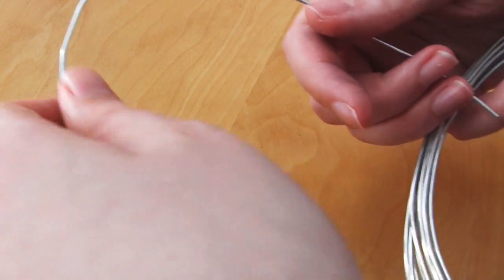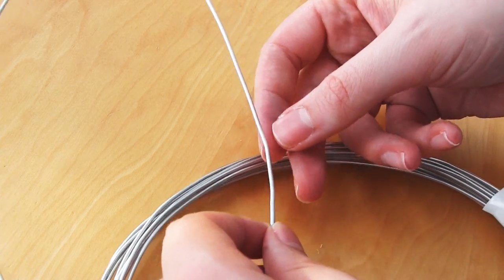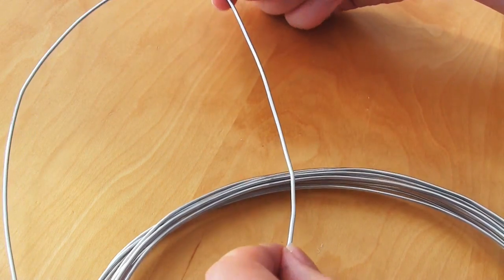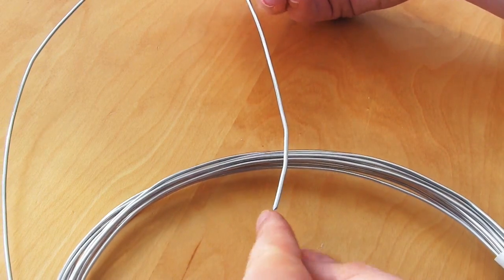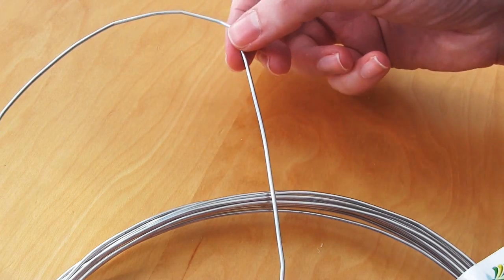So the very first step is to make the main frame of the tree using the wire. You'll need to decide beforehand how tall and how big in general you want your tree. Because that will determine the size of the frame you want.